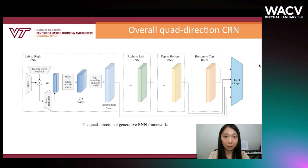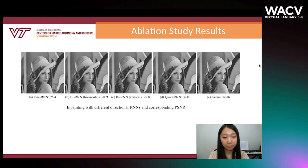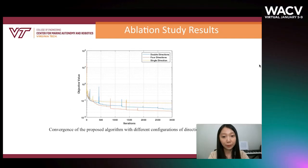Here are some predictions from our system. We can see that it generates reasonable predictions when we apply the optimal quadirectional generative CRN framework design. The learning curve shows a quick descent at the beginning. The figure shows that the fully quadirectional encoder has a quicker convergence rate compared to single or bidirectional RNNs.